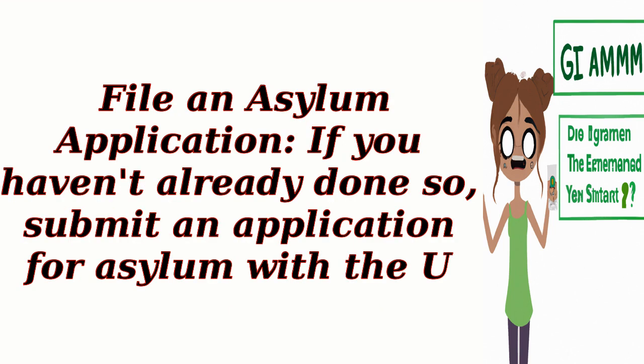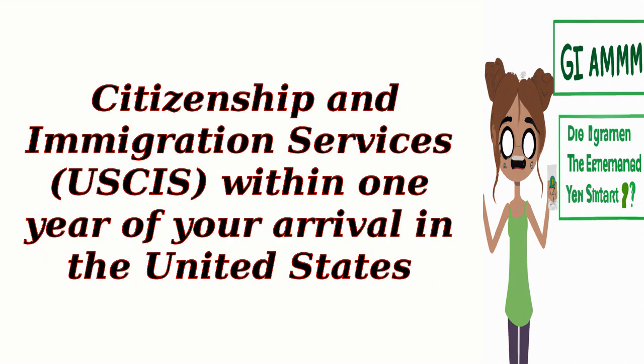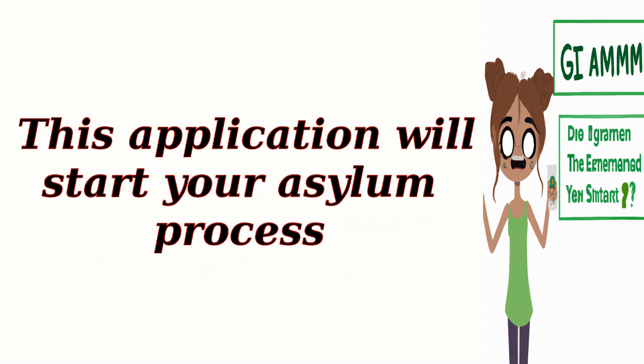File an asylum application. If you haven't already done so, submit an application for asylum with the U.S. Citizenship and Immigration Services, USCIS, within one year of your arrival in the United States. This application will start your asylum process.